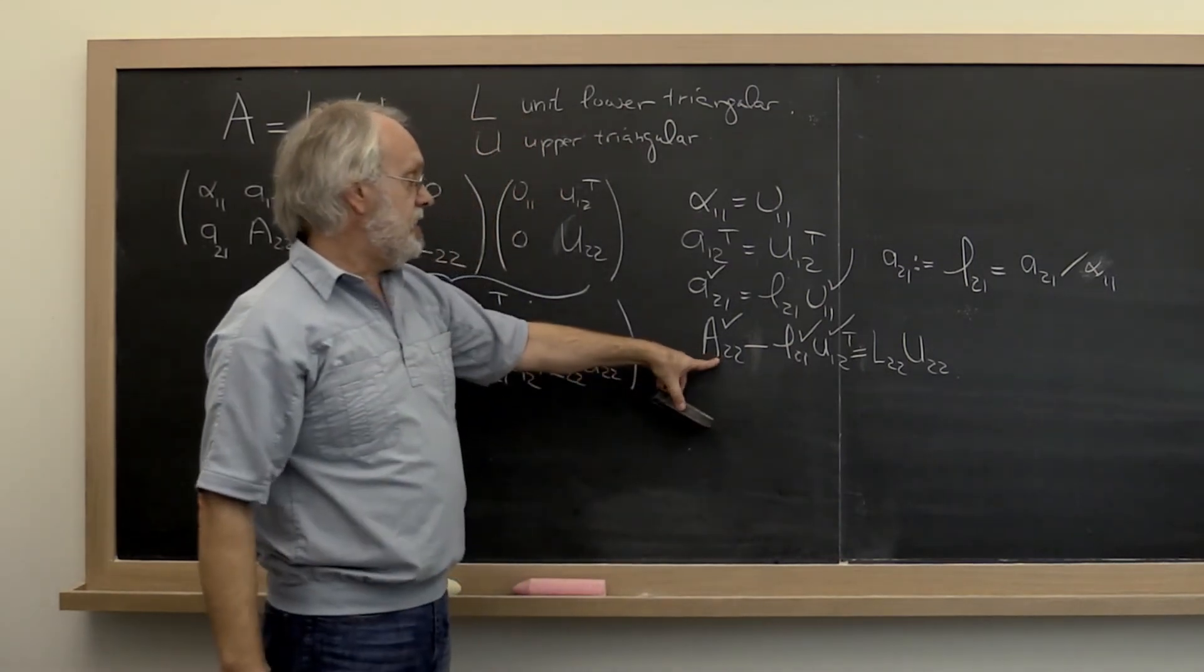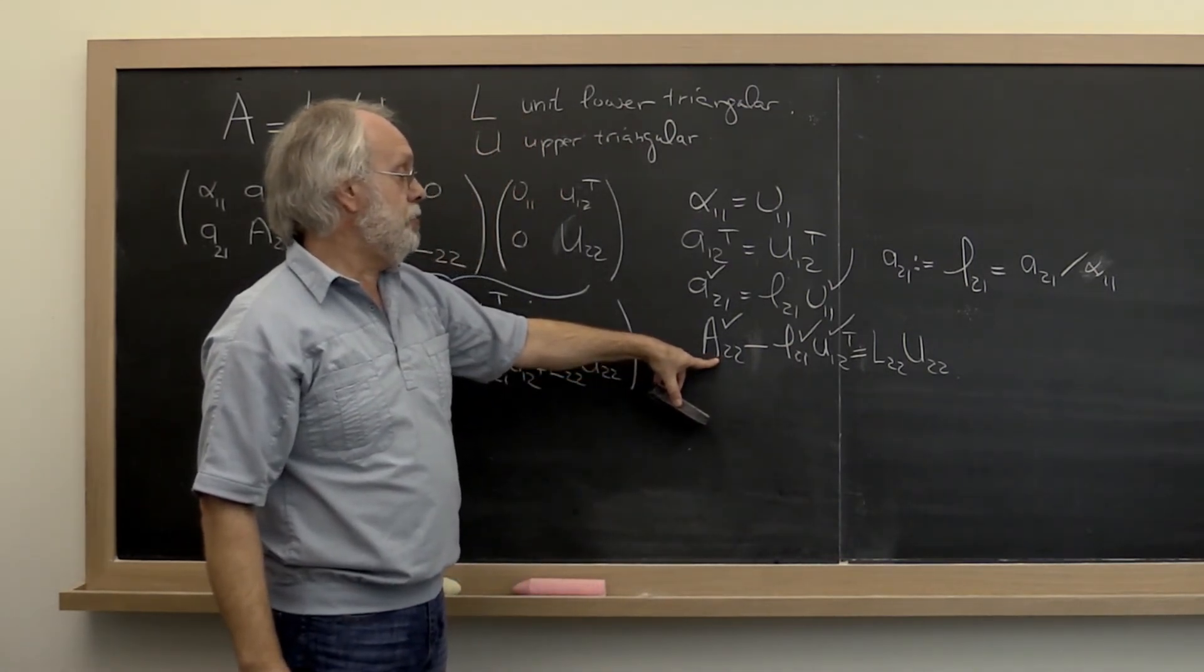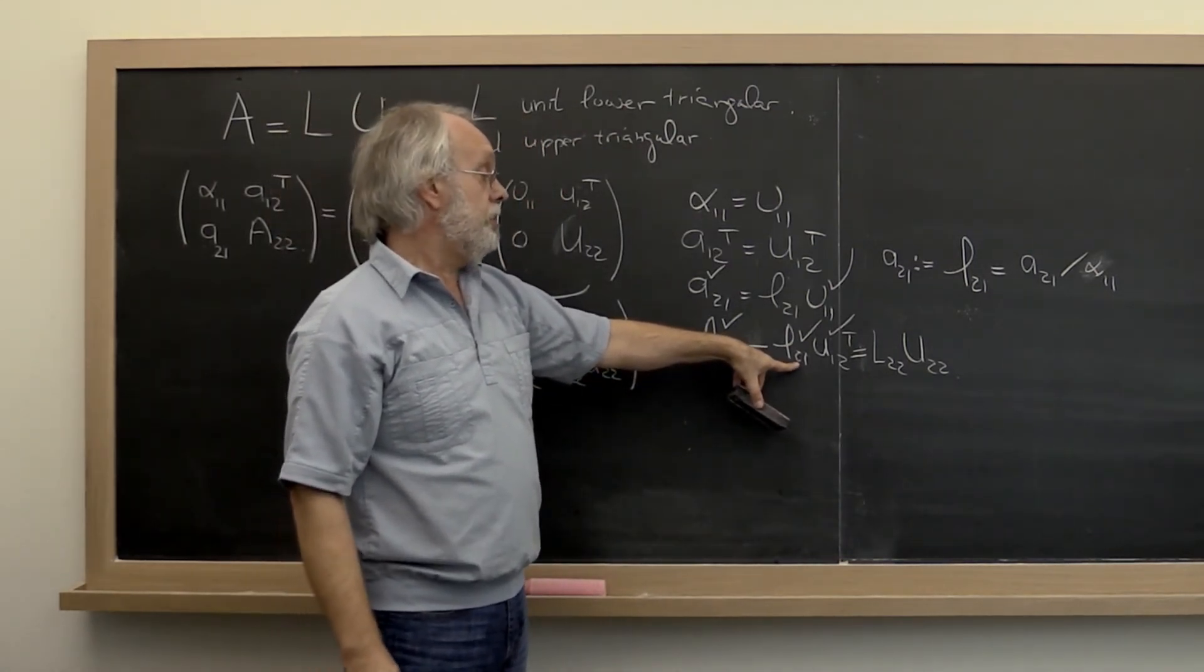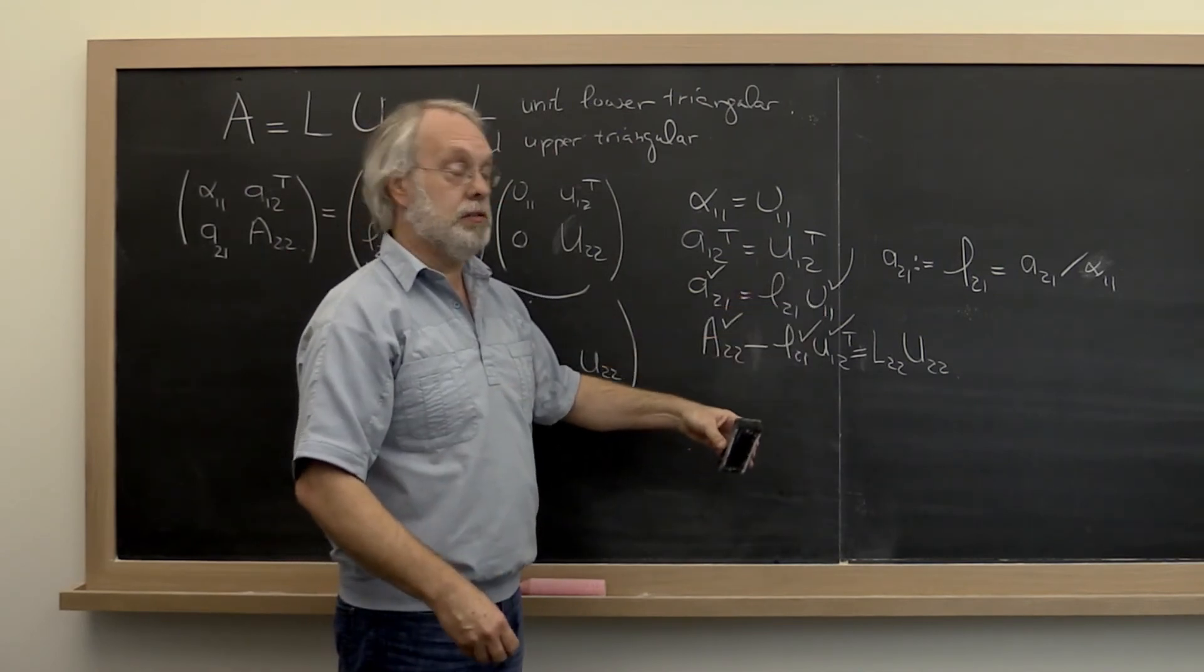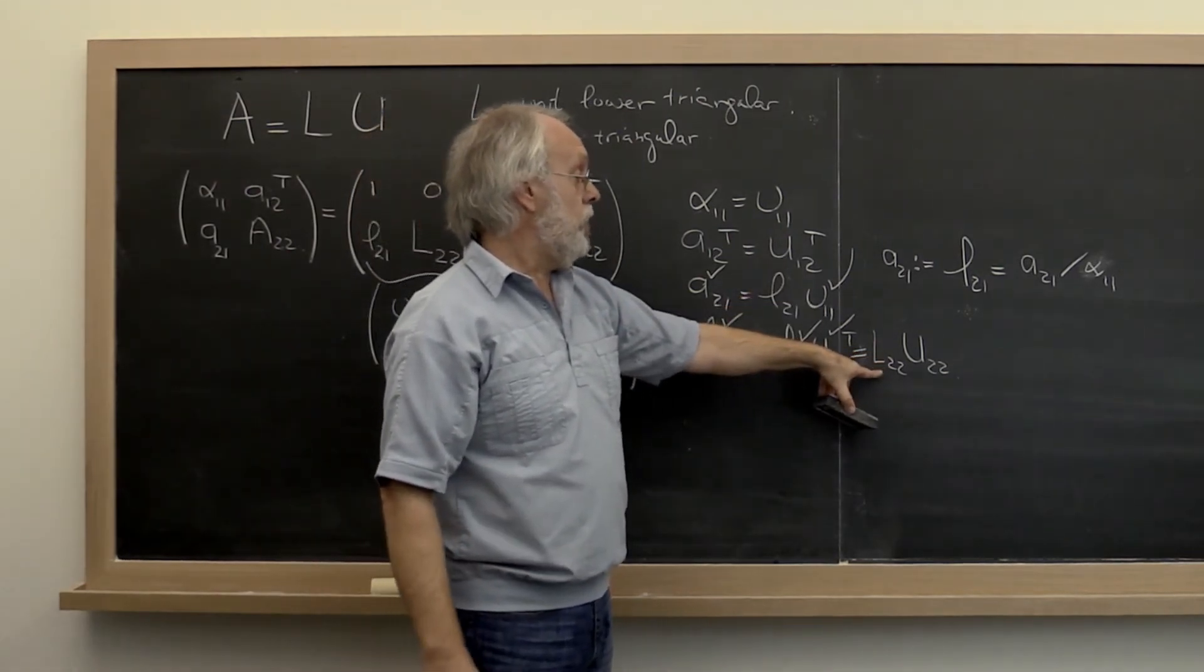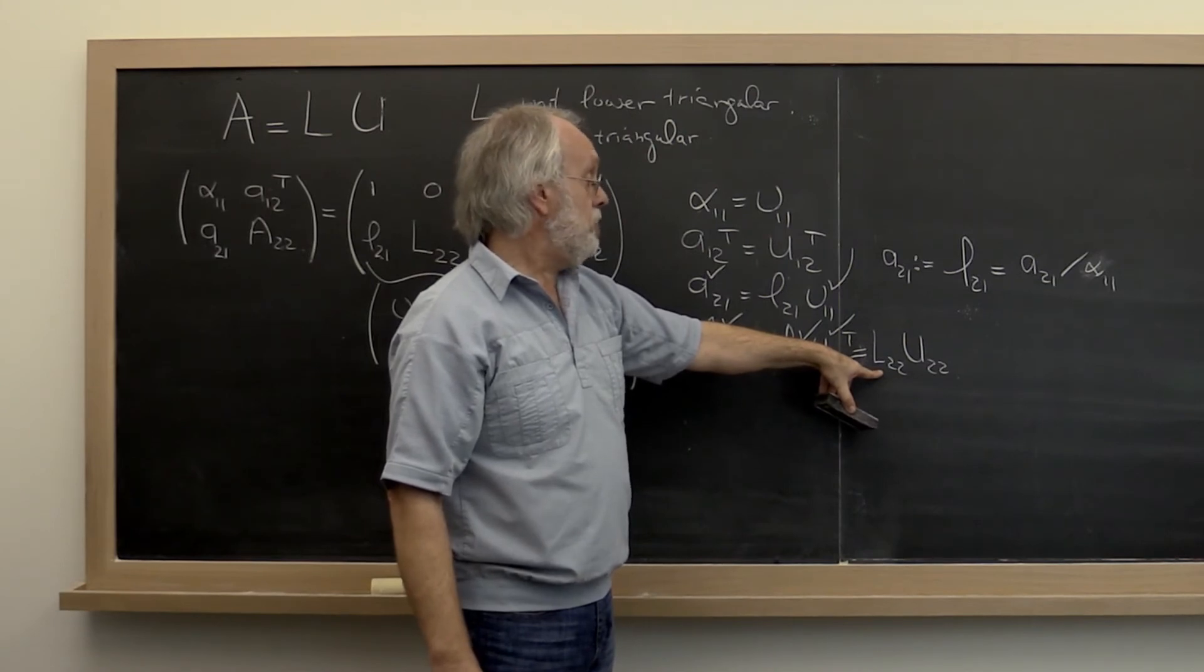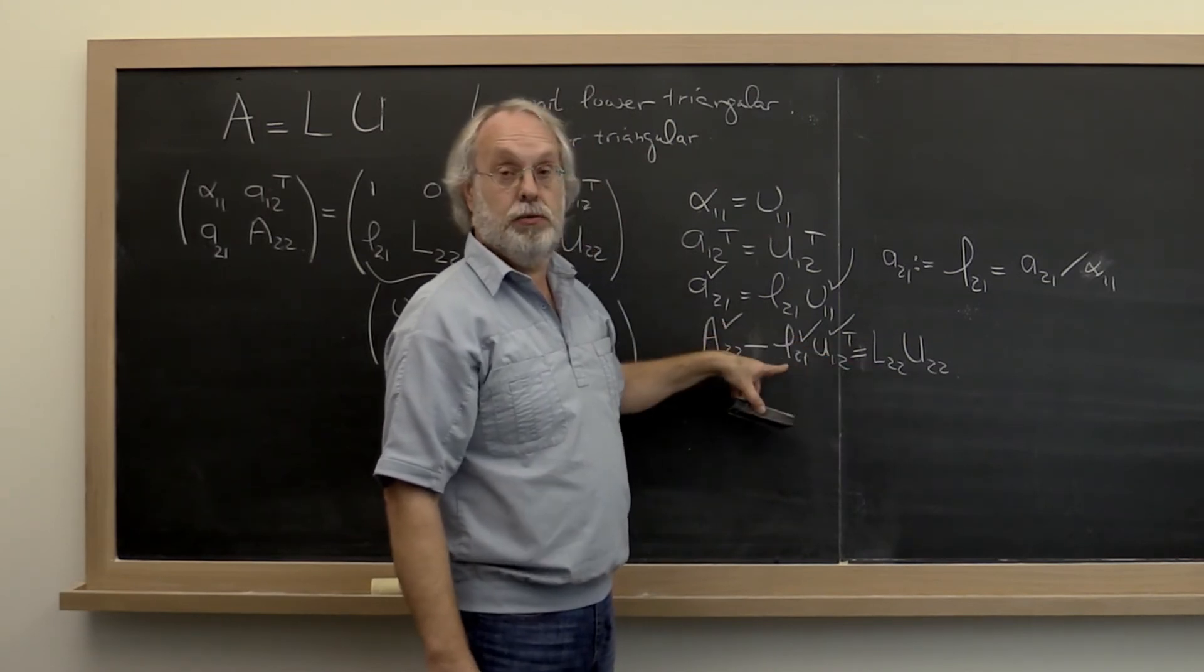Then we can bring this to the other side by subtracting it here and changing this to an equal. And what we notice is that if we update A 2 2 by subtracting off this outer product, performing a rank 1 update, then what we're left with is having to compute the LU factorization of the result.